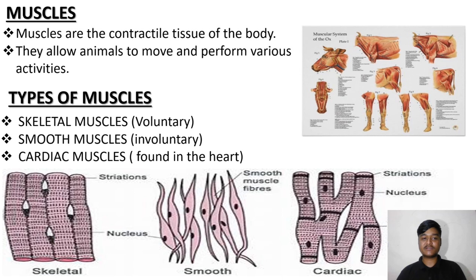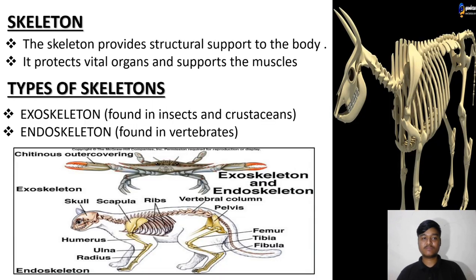Types of muscles: Skeletal muscles are voluntary in nature. Smooth muscles are involuntary in nature. Cardiac muscles are found in the heart. You can observe the images of skeletal muscle, smooth muscle, and cardiac muscle.